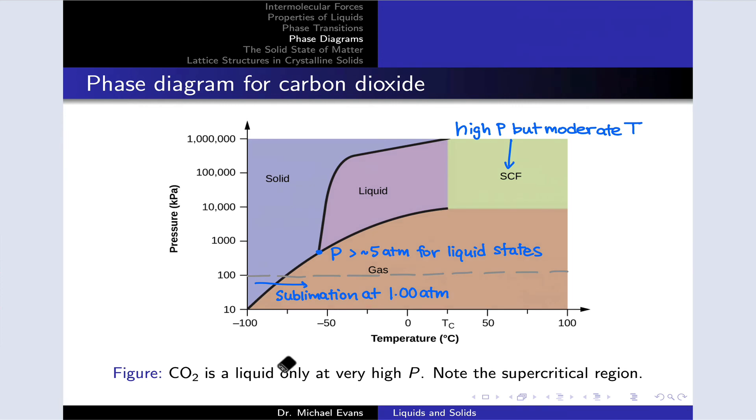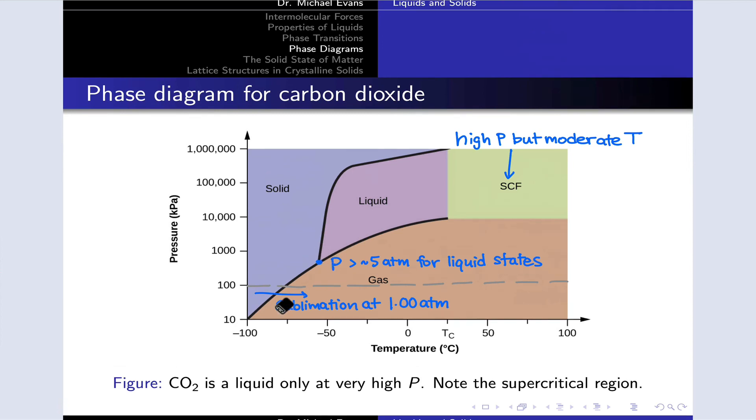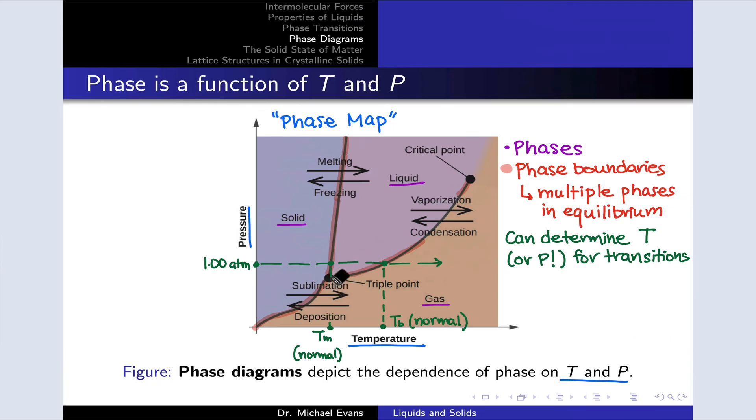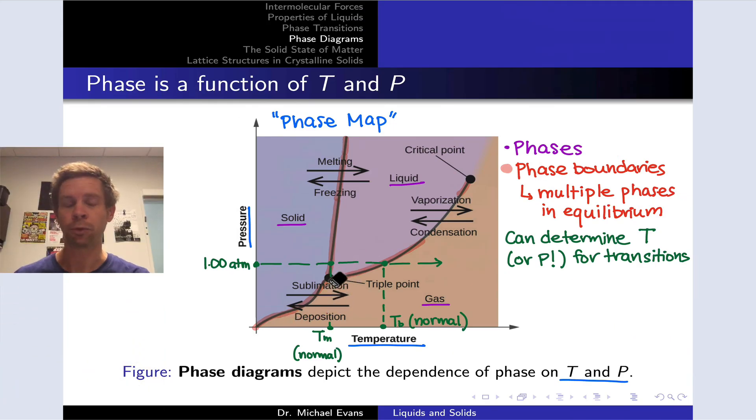One last thing concerns this point where all three phase boundaries come together. We see it in the phase diagram for carbon dioxide, and also in the phase diagrams for water and our example from the first slide. This is called the triple point. The triple point is very special because it's the point at which all three phases—solid, liquid, and gas—are all in equilibrium with each other. They're all of equal stability.